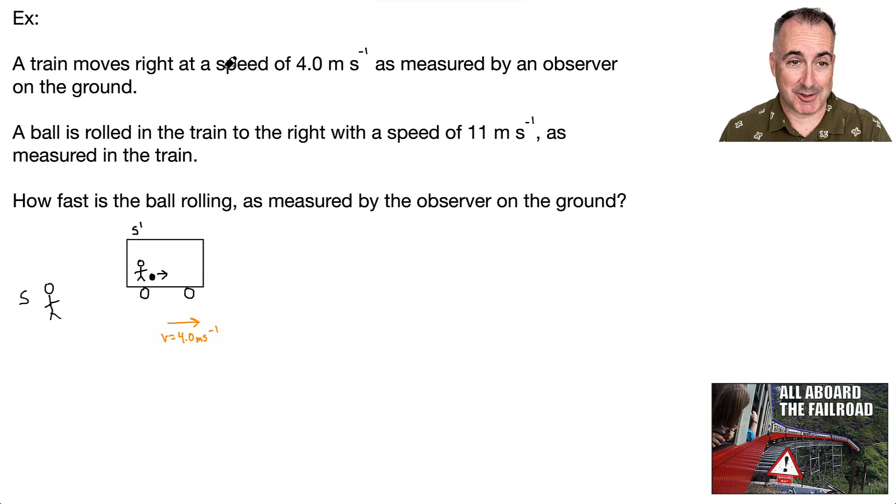So then let's do an example with a train. All aboard the fail road. If a train moves to the right at a speed of 4 meters per second as measured by an observer on the ground. So I'm sitting here on the ground, I'm watching this train go by and inside the train someone rolls a ball to the right with a speed of 11 meters per second. So what variable is that? If this is inside the train and this is 11 meters per second as measured by someone in the train, then this must be U primed. And the question is, how fast is a ball rolling as measured by the observer on the ground?